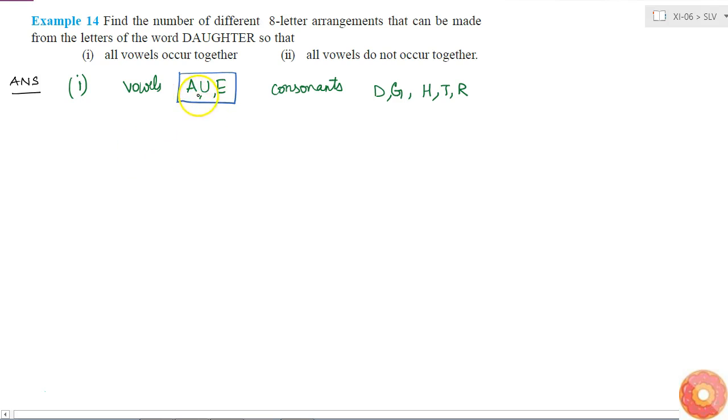And consider this as one letter. Then I am left with six letters. If I arrange these six letters then I will get 6 factorial arrangements, and in all those arrangements A, U, and E are occurring together. But this is not the total number of possibilities.